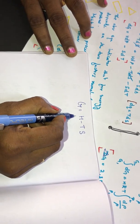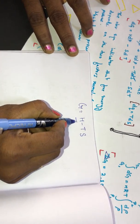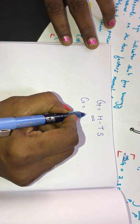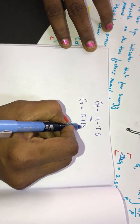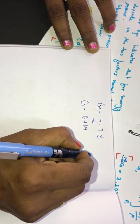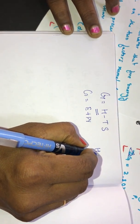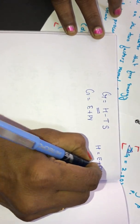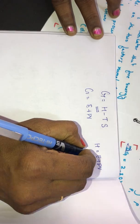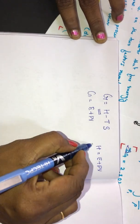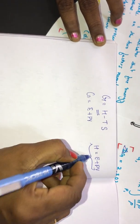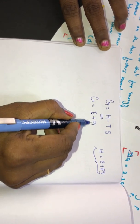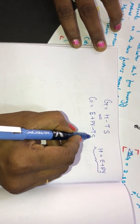In this expression, we substitute in the place of H the quantity E plus PV, because we know that enthalpy H is equal to E plus PV — that is internal energy, pressure, and volume. So G becomes equal to E plus PV minus TS.